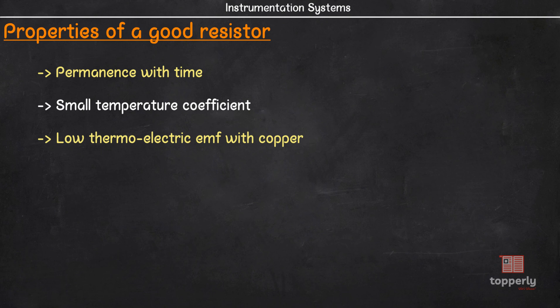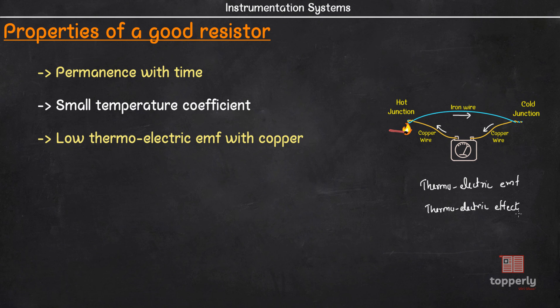As a side note, let me first teach you what is a thermoelectric effect. When two dissimilar metals like iron and copper are joined at both ends to form a closed circuit and one of the junction is at a higher temperature than the other, then a current is set up in the circuit. The emf driving this current is called thermoelectric emf. And this phenomenon is known as thermoelectric effect. So here it says that a good resistor should have a low thermoelectric emf with copper as copper is the metal we use in connecting wires.